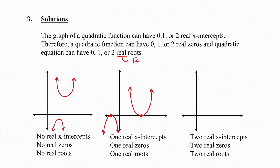For two real roots and two x-intercepts, the parabola could open upward and cross the x-axis twice — once on the way down and once on the way up. Or the parabola could open downward and cross the x-axis once on each side. Either way, that gives two x-intercepts and two solutions.